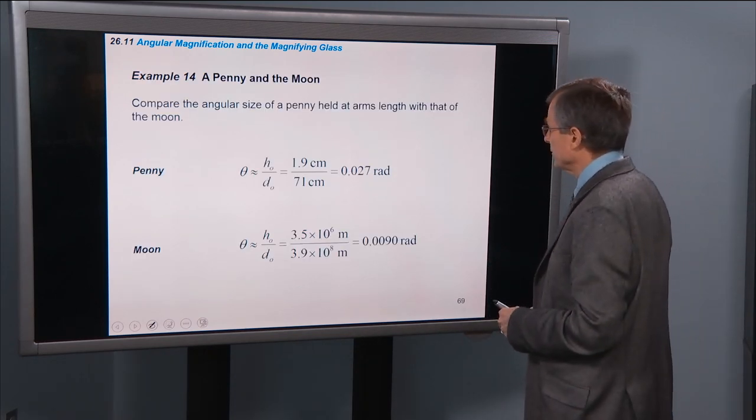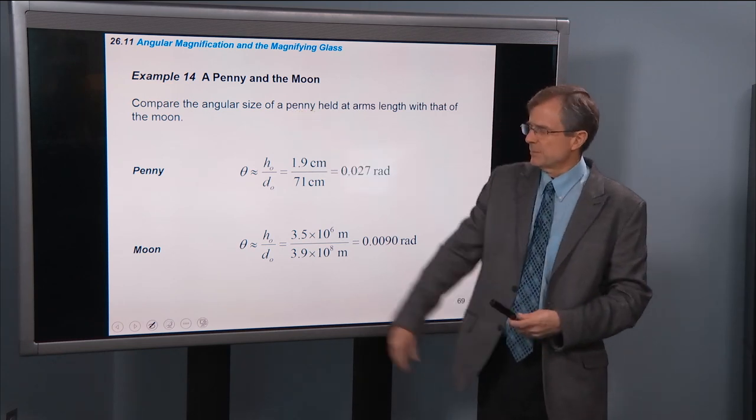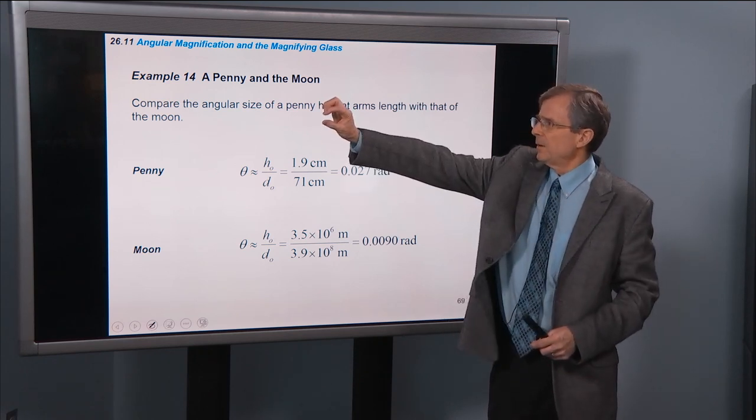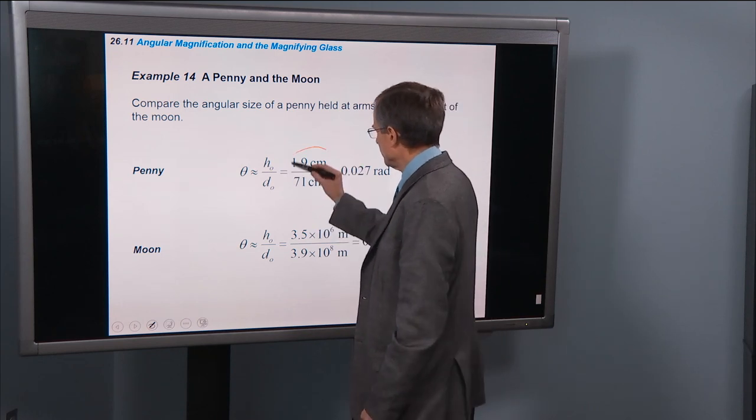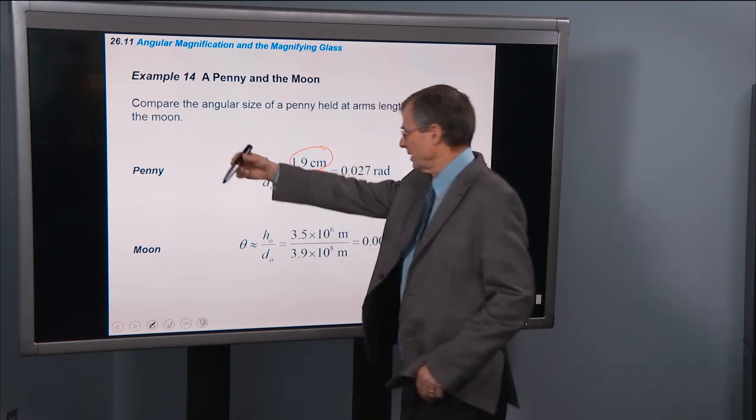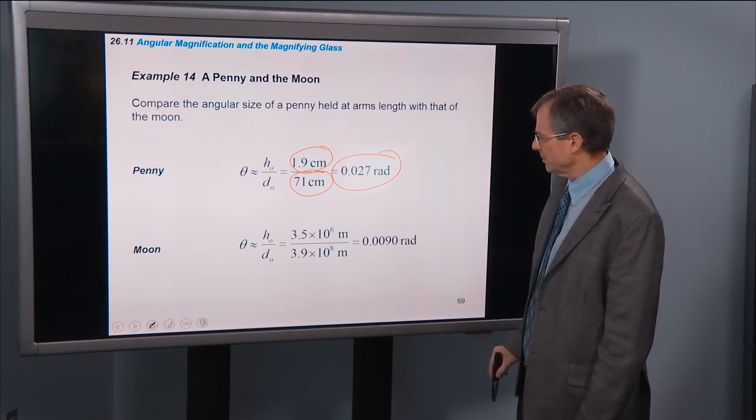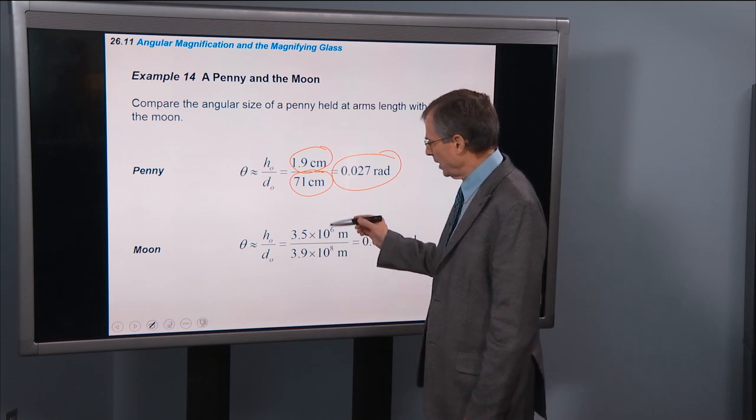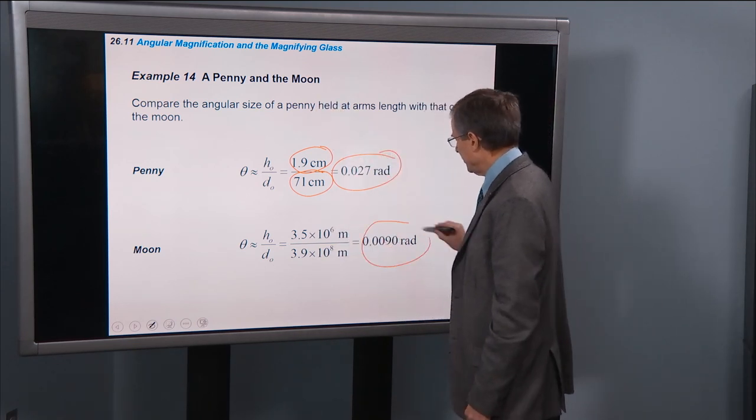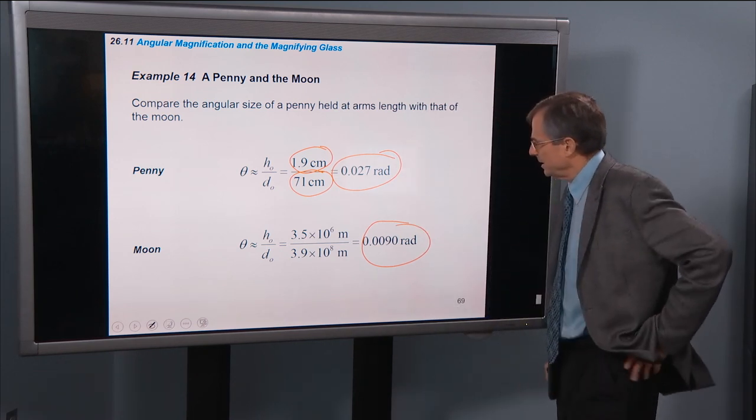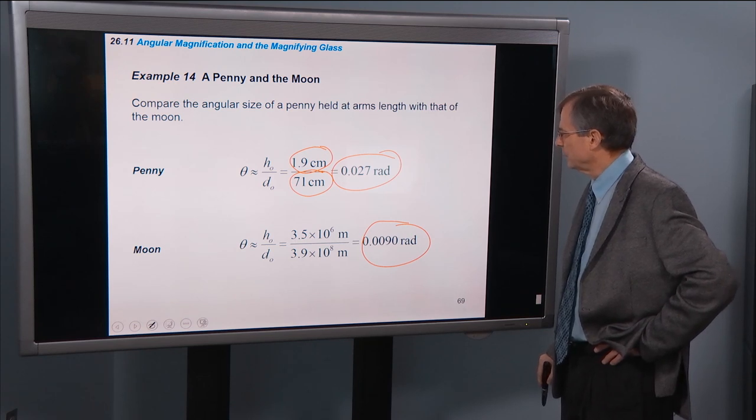Compare the angular size of a penny held at arm's length with that of the moon. So you hold this penny out at arm's length, what will its angular size be? Well, the size of a penny is 1.9 cm, arm's length is about 71 cm, it's 0.027 radians. What's the size of the moon? Well, we know the diameter of the moon, we know the distance to the moon, and we find that its angular size is 0.009 radians.